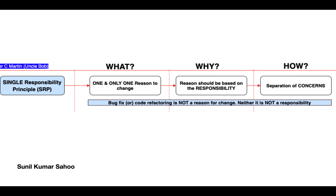So what is SRP? SRP tells us one and only one reason to change. Why SRP? The reason should be based on responsibility — that's why we say one and only one reason to change, and we map that with responsibility. How can we achieve this? The easiest way is by separation of concerns. By using separation of concerns, we can achieve single responsibility.